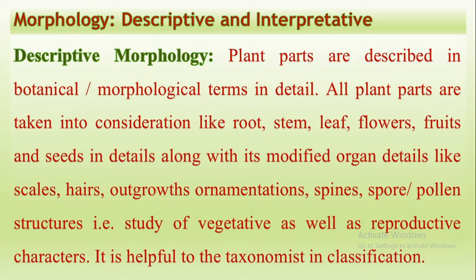Then leaves — the leaves may be simple leaves or they may be compound leaves. The compound leaves are of different types. Under flowers, there may be different types of flowers with different shapes — it may be trimerous, tetramerous, or pentamerous — and the flowers have different botanical terms. Then fruits — there may be simple fruits, compound fruits, or aggregate fruits. These are the different characters in the form of botanical terms.